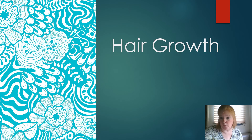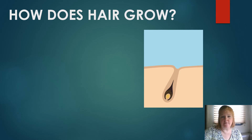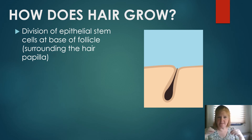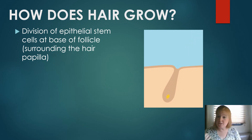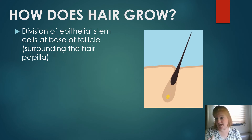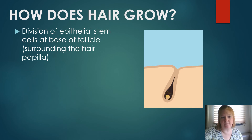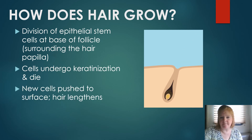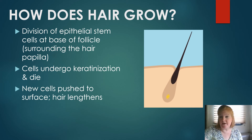Hair grows through division of epithelial stem cells at the base of the follicles, around the hair papilla. The cells undergo keratinization and die. New cells are pushed to the surface and the hair lengthens.